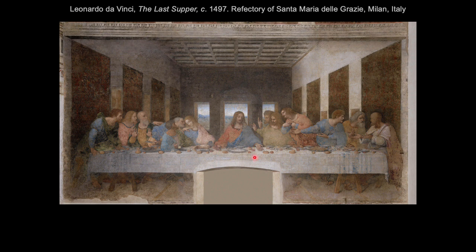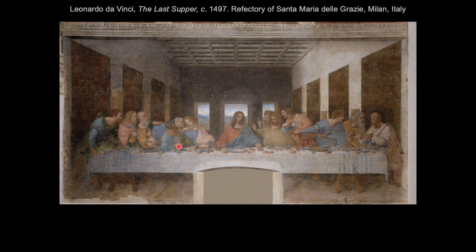Christ's body forms a stable pyramid, and he is flanked by his 12 disciples in groups of three on either side. The scene is meant to capture the individual reactions of the disciples as Jesus announces that one of them will soon betray him. In the first group to Christ's right, we see a young John the Evangelist and an older Peter. We also have Judas, the disciple who will betray Jesus — he's clutching a bag of money close to his body, presumably already paid for his betrayal, and his face is largely in shadow.